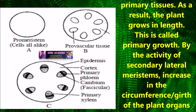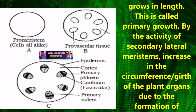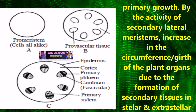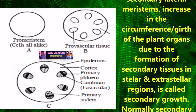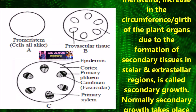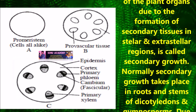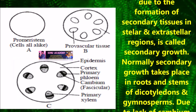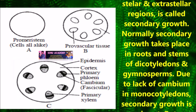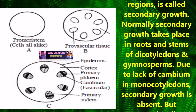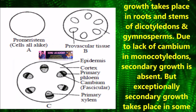Lateral meristem increases the circumference of the plant organs due to the formation of secondary tissues in stellar and extracellular regions. It is called secondary growth. Normally, secondary growth takes place in roots, stems and dicotyledons, gymnosperms, etc.